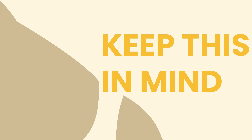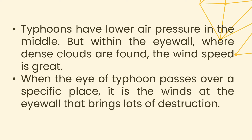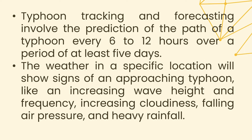Keep this in mind. Typhoons have lower air pressure in the middle, but within the eye wall, where dense clouds are found, the wind speed is great. When the eye of a typhoon passes over a specific place, it is the winds at the eye wall that bring lots of destruction. Typhoon tracking and forecasting involve the prediction of the path of a typhoon every 6 to 12 hours over a period of at least 5 days. The weather in a specific location will show signs of an approaching typhoon, like an increase in wave height and frequency, increasing cloudiness, falling air pressure, and heavy rainfall.